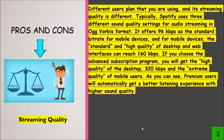Now, streaming quality. Different plans have different streaming quality. Typically, Spotify uses three different sound quality settings for audio streaming. It offers 96 kilobytes per second as a standard bit rate for mobile devices, and the standard and high quality for the desktop and web interface can reach 160 kilobytes per second. If you choose the advanced subscription plan, you will get high quality at 320 kilobytes per second. Premium users will automatically get a better listening experience with higher sound quality.